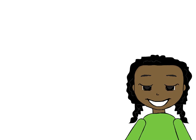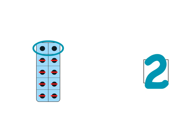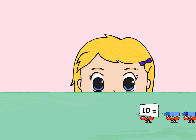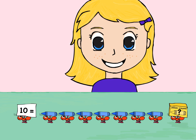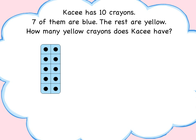Subtraction tiles are a great way to model word problems with missing addends. Let's try this example: Casey has 10 crayons. Seven of them are blue and the rest are yellow. How many yellow crayons does Casey have? Let's find out what we know. We know that Casey has 10 crayons in all, and seven crayons are blue and the rest are yellow.